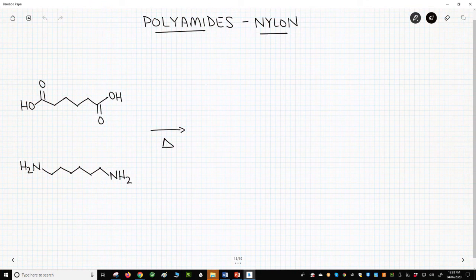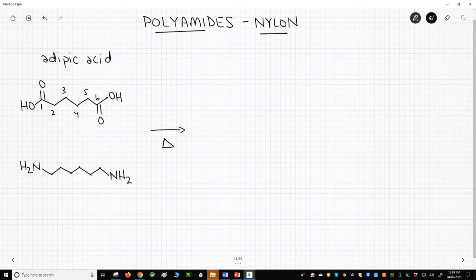The first is made from a diacid monomer, shown at the top, called adipic acid. Adipic acid has six carbons.